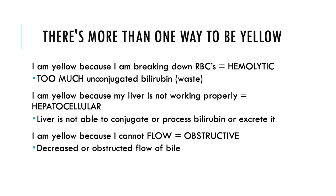Believe it or not, there is more than one way to be yellow. Looking at the different types of jaundice, there's hemolytic, hepatocellular, and obstructive. With hemolytic jaundice, you're yellow because you're breaking down too many red blood cells — one of the waste products being unconjugated bilirubin. With hemolytic jaundice, there's too much breaking down and the liver just can't keep up.